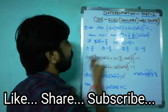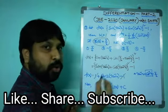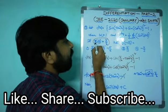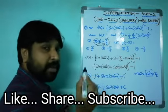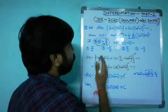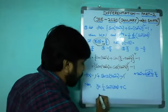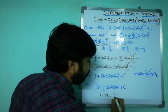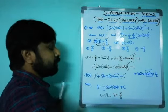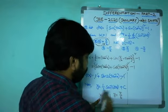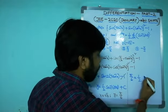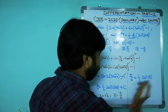The condition y(√3) = π/6 means: whenever x = √3, y = π/6. Substitute x = √3 and y = π/6 into y = (1/2)·sin⁻¹(f(x)) + C to find the constant C.